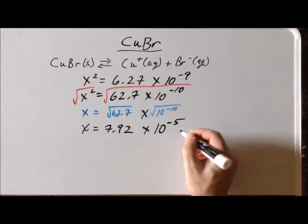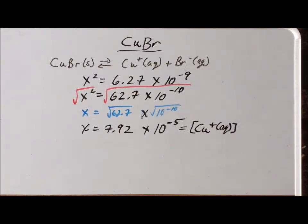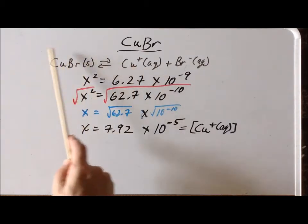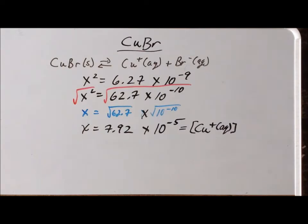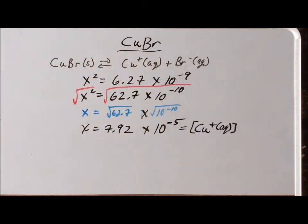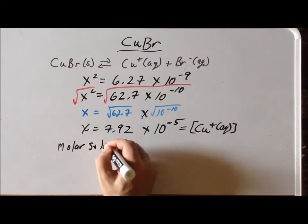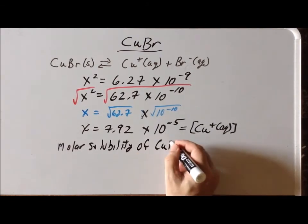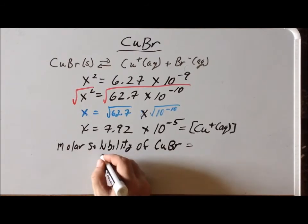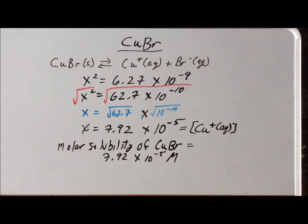We remind ourselves that x is equal to the concentration of the cuprous ion. We also recall that we get one cuprous ion for every formula unit of cuprous bromide that dissolves, so the number of moles of copper bromide that dissolve equals the number of moles of copper plus 1 in solution. Therefore the molar solubility of cuprous bromide is exactly 7.92 times 10 to the minus 5 molar, since the brackets represent units of moles per liter.